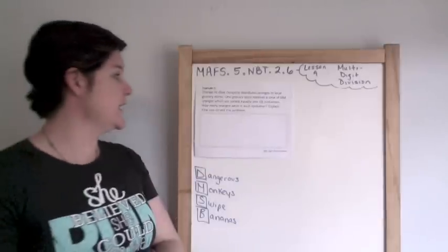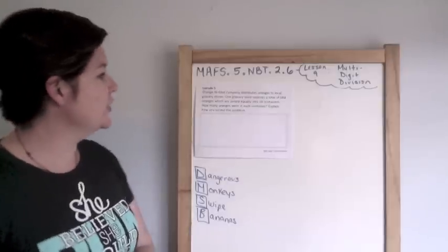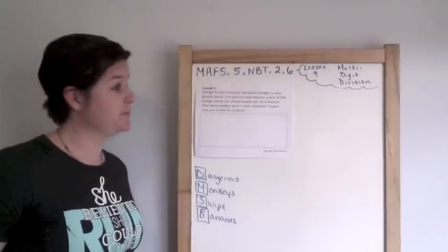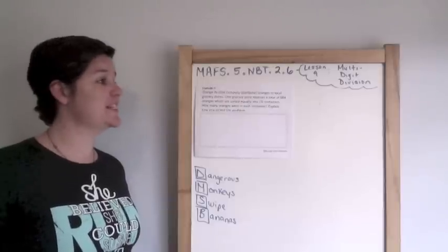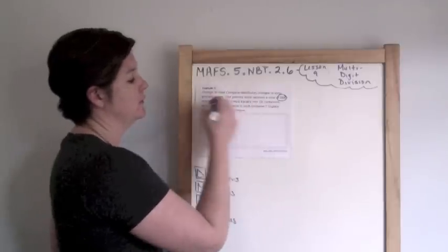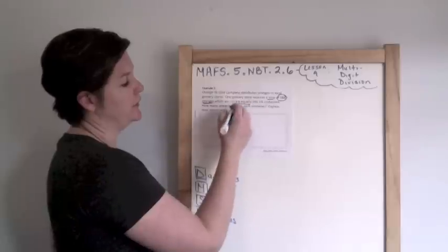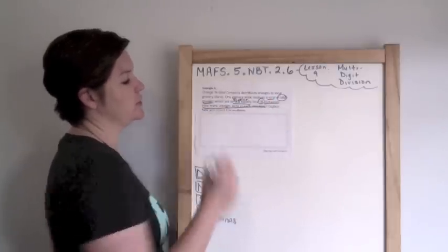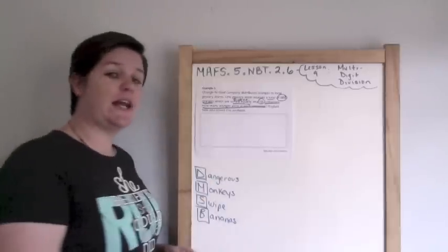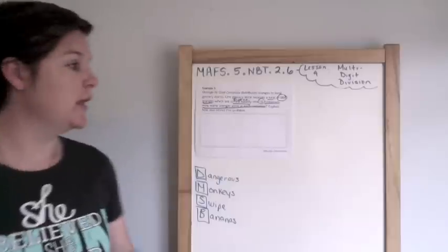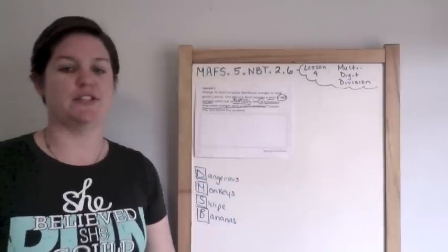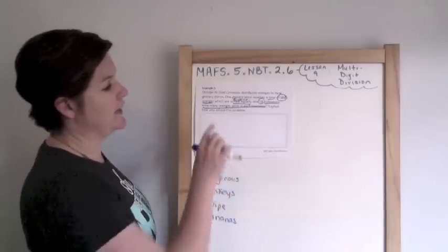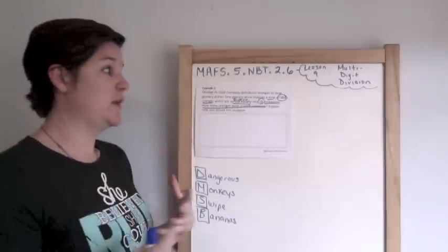Alright, last one is example number five. It says Orangey Glad Company distributes oranges to local grocery stores. One grocery store receives a total of 684 oranges, which are sorted equally - that sounds a lot like division - sorted equally into 18 containers. How many oranges were in each container and explain how you solve this problem?